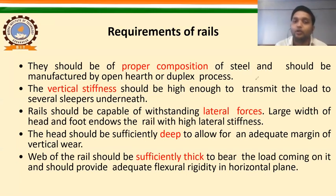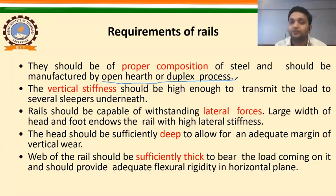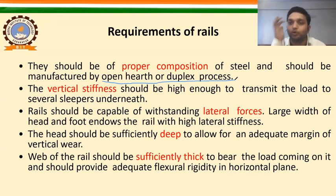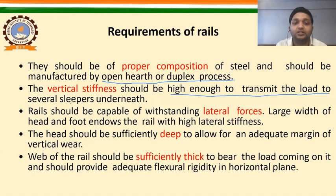Rails should be manufactured by open hearth or duplex process. The second requirement is that the vertical stiffness should be high enough to transmit the load to several sleepers under the rail. The third requirement is that rails should be capable of withstanding the lateral forces, and a large width of head and foot endows the rail with high lateral stiffness.